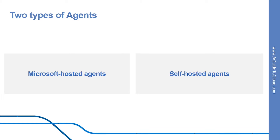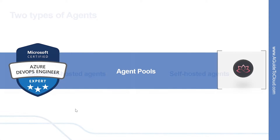If not, you can use a self-hosted agent. So what is a self-hosted agent? An agent that you set up and manage on your own to run build and deployment jobs is a self-hosted agent. You can use self-hosted agents in Azure Pipelines, and they give you more control to install dependent software needed for your builds and deployments. You can install the agent on Linux, macOS, and Windows machines. You can also install an agent on a Linux Docker container. After you have installed the agent on a machine, you can install any other software on that machine as required by your build or deployment jobs.